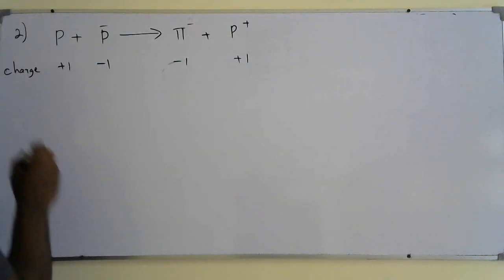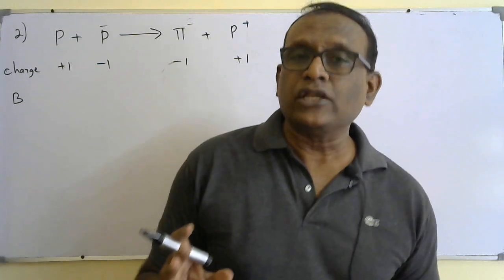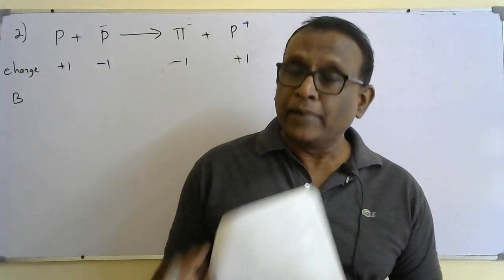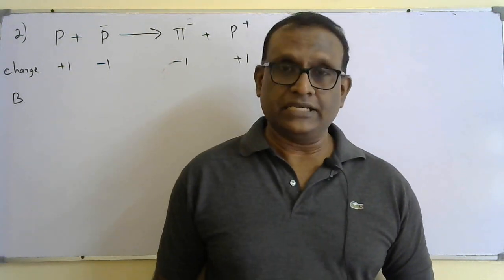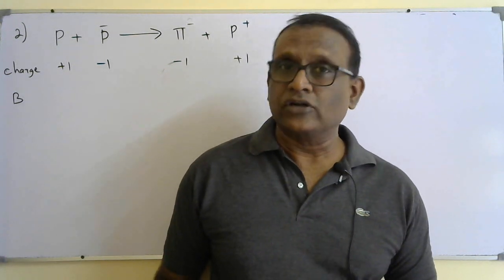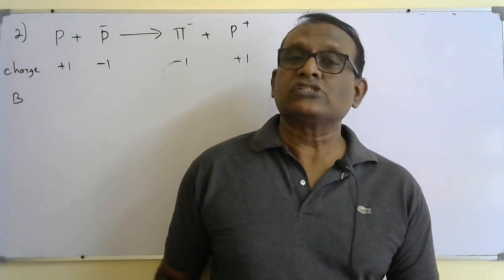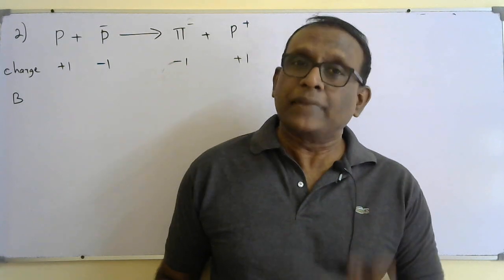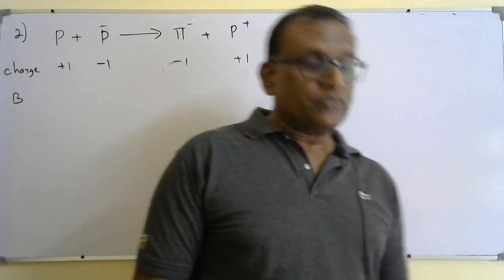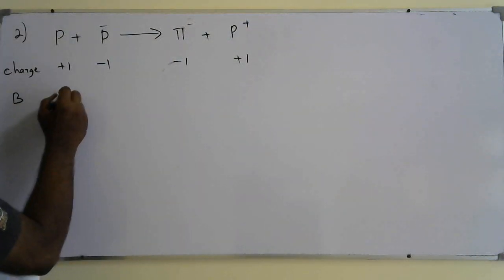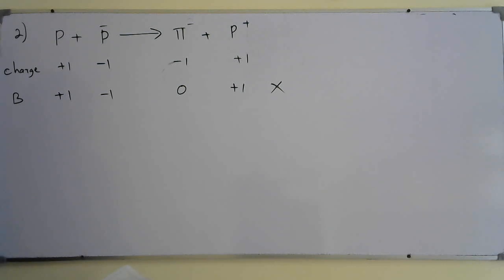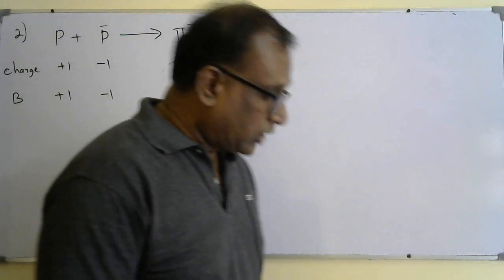Baryon number: for any quark it is +1/3, for any anti-quark it is −1/3, for any lepton it is zero. A meson (quark + anti-quark) has baryon number zero; a baryon (three quarks) has baryon number +1; an anti-baryon like antiproton has baryon number −1. Checking answer B: proton +1, antiproton −1, pi-minus 0, proton +1 — baryon number is not conserved. Answer B is not acceptable.